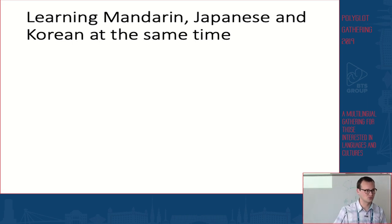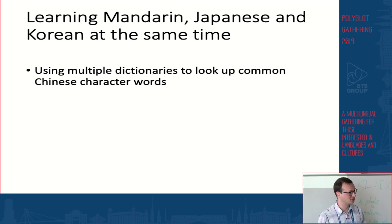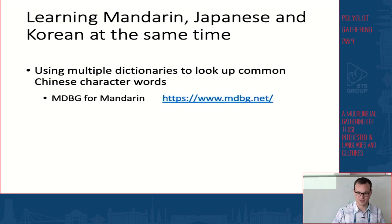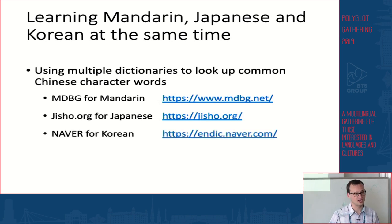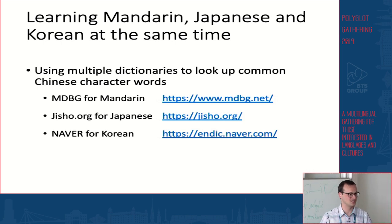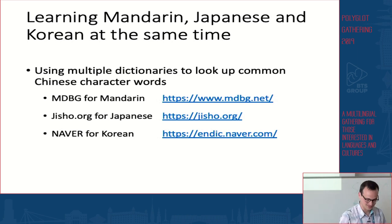To figure out what words can be shared between these languages, I was using multiple dictionaries to look up common words. I used MDBG for Mandarin, a dictionary called jisho.org for Japanese, and a dictionary called Naver for Korean. If you're learning some of these languages, you might have heard of these dictionaries and even used them yourself. But they weren't exactly designed to be used the way I was using them.